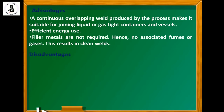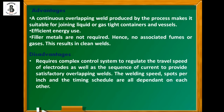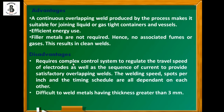Some disadvantages: it requires complex control systems to regulate the travel speed of the electrode as well as the sequence of current to provide satisfactory overlapping welds. The welding speed, spots per inch, and timing schedules are all dependent on each other. It is also difficult to weld metals having a thickness greater than 3 mm, which is the most common limitation of the seam welding process.